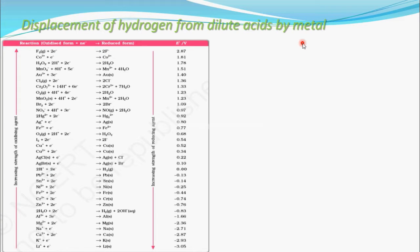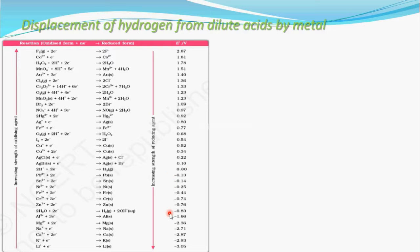Now you know this table. These are reduction reactions, these are reduced forms, and these are reduction potentials. Here is the reduction of hydrogen — its reduction potential is 0.0. Above hydrogen are species with positive electrode potential, and below hydrogen are species with negative electrode potential.